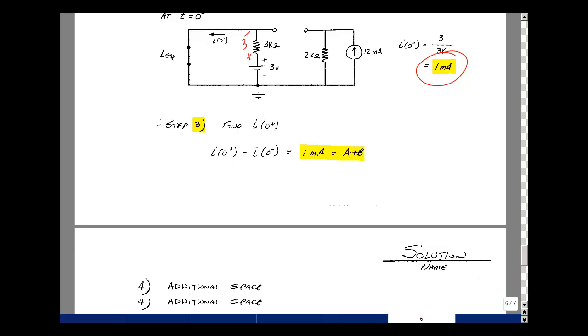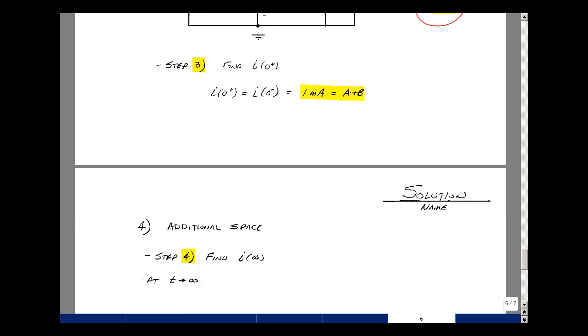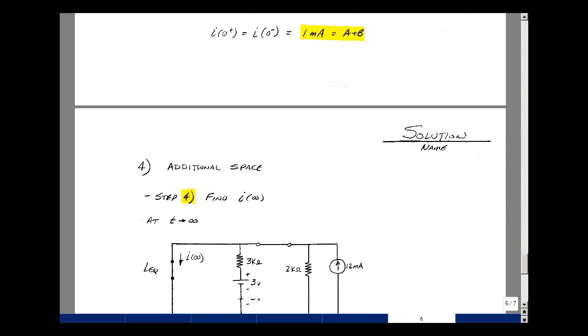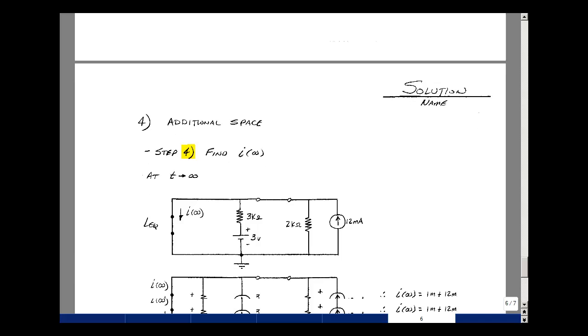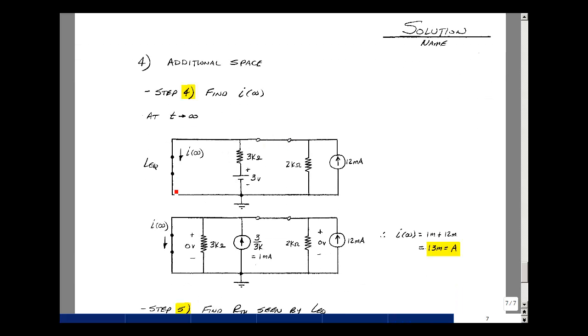Step 4 is to get my second constraint, and that is to look at t approaching infinity, or five-time constants. Switch has been closed for a long time. The inductor becomes a short, and now I've got a two-source circuit to solve for the current in the short circuit.